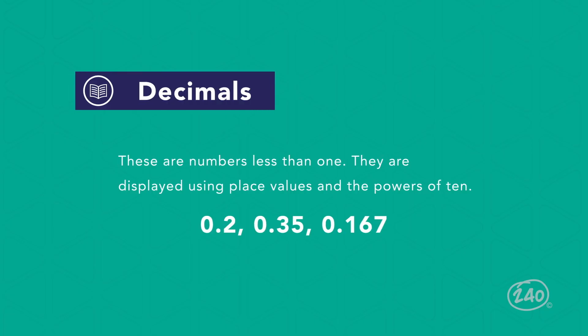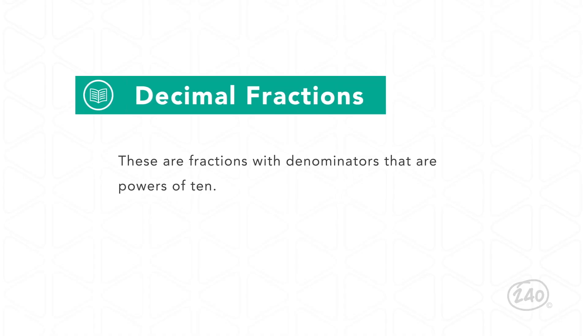Decimals are numbers less than one. They are displayed using place values and the powers of 10. Usually, we first learn about decimal fractions, which are fractions with denominators that are powers of 10. For example, 1 tenth is the same thing as 0.1.